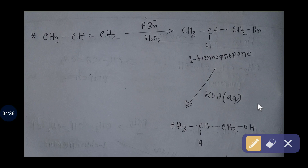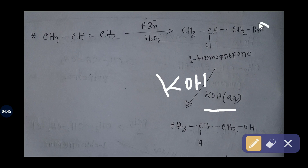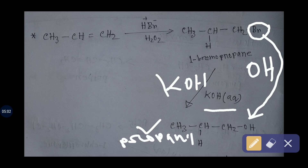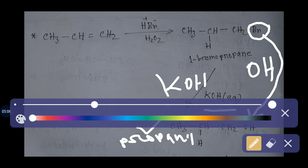If you add aqueous potassium hydroxide, the bromine will be replaced by an OH group and you will get propanol — 1-propanol.